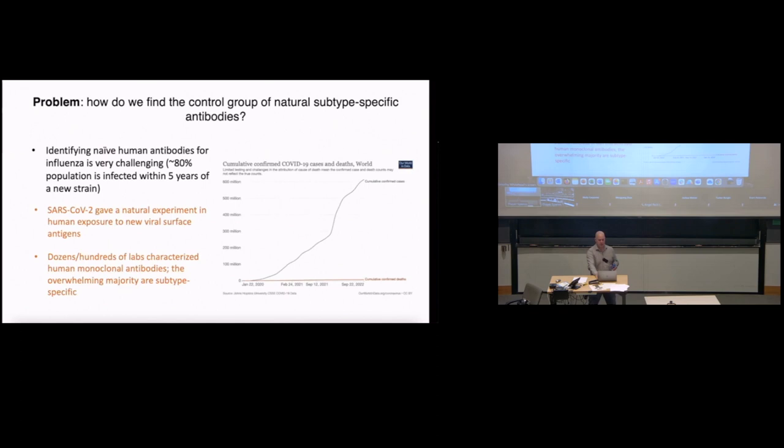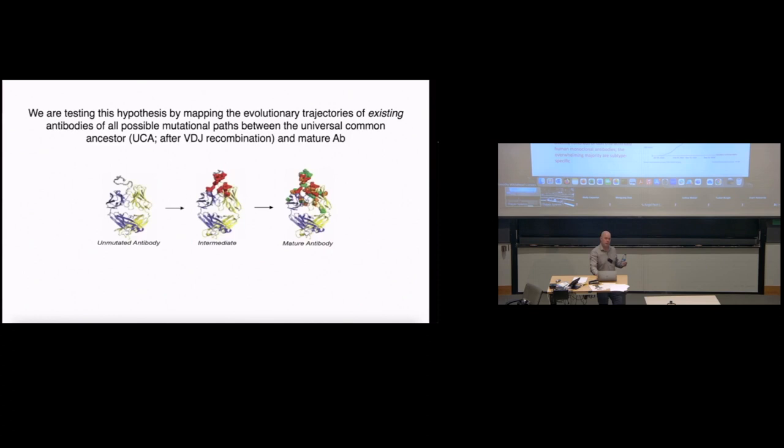Identifying these naive human antibodies is very challenging. My collaborator Jenna at CU Anschutz says 80% of the population gets infected within five years of a new strain. No one goes and fishes for kind of un-extraordinary, ordinary antibodies. So it's fortunate for science and bad for the rest of the world, SARS-CoV-2 gave a natural experiment on human exposure to new viral surface antigens. Dozens to hundreds of labs rushed to publish their studies on monoclonal antibodies. These turned out, most of these turned out to be subtype specific or run-of-the-mill. And so we have our control group.